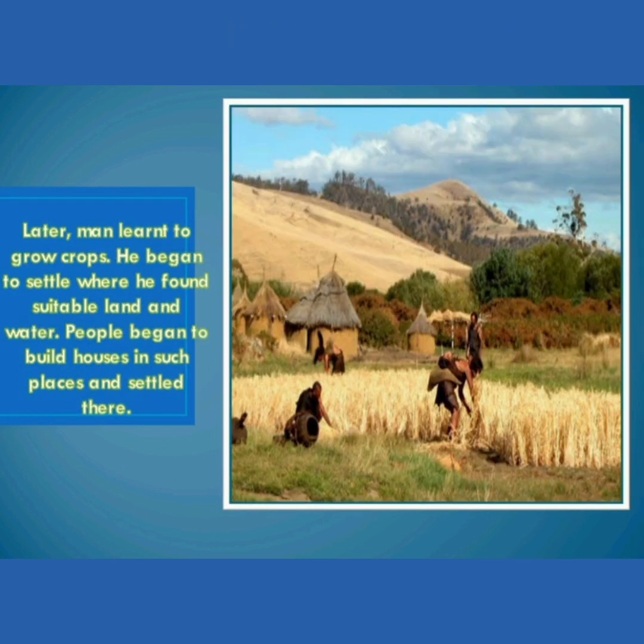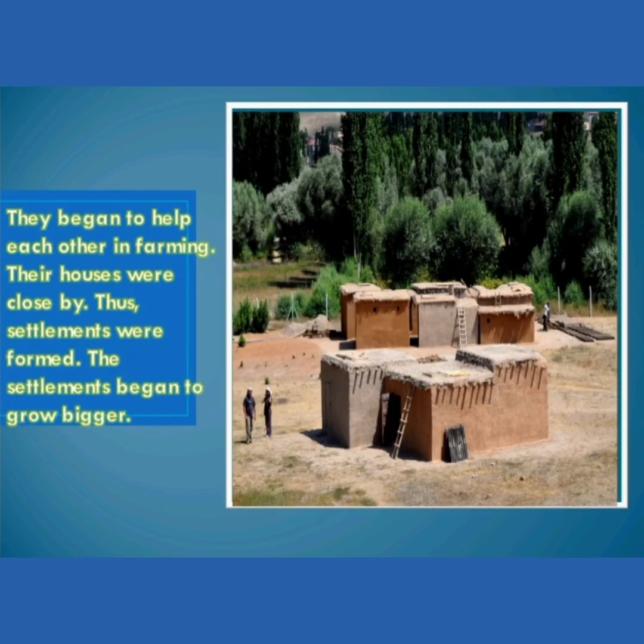Later, man learned to grow crops. He began to settle where he found suitable land and water. People began to build houses in such places and settled there. They began to help each other in farming. Their houses were close by, and thus settlements were formed.